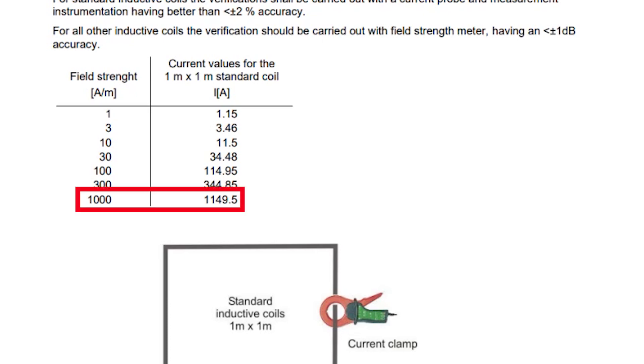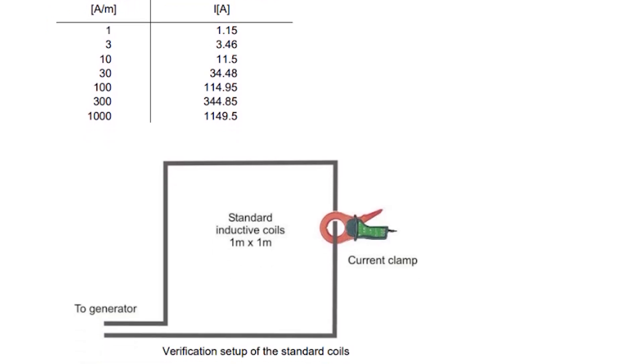For our video we're interested in 1000 amps per meter so we would need to measure roughly 1150 amps through our coil. You can see a brief setup overview just below the table how that might look and we'll probably show that to you here as well a little later on in the video.